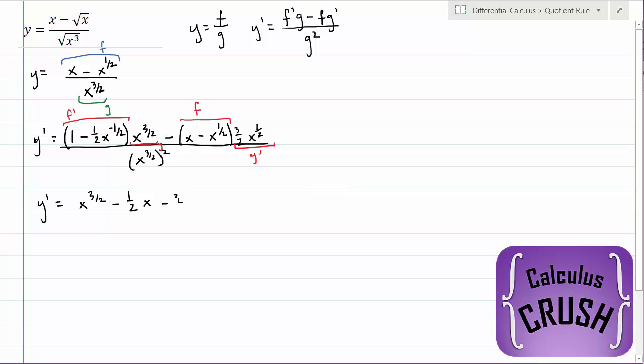Minus 3 halves, x to the power of 3 halves plus 3 halves x. x to the half times x to the half is x to the 2 over 2, which is just x. And this is all divided by x cubed.